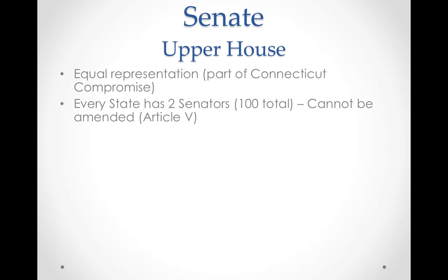From Article 5, which is about amending and the process we have to go through to make changes to the Constitution — the one thing that can never be changed about the Constitution is that we will always have equal suffrage. Suffrage means voting — equal voting in the Senate.